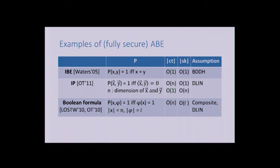You can do the sum of ciphertext size plus secret key size linear using standard assumptions on pairings. You can also do Boolean formula, also in linear size, again using standard assumptions with pairings. I'm only giving fully secure attribute-based encryption—the strongest notion of security—so I can compare the relative efficiency between all these schemes.